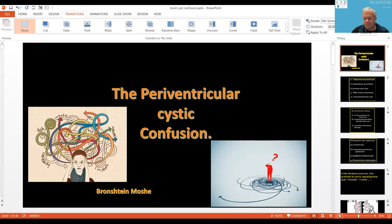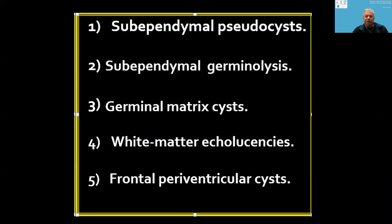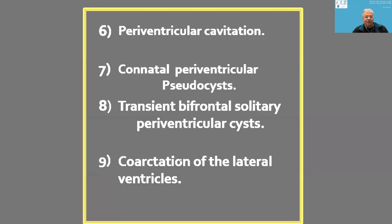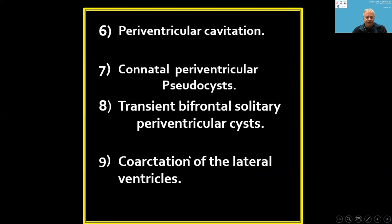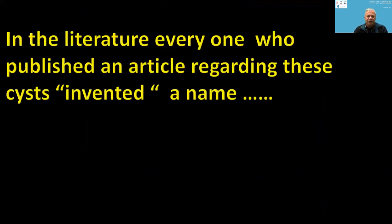I want to give a small lecture about periventricular cystic lesions. There are many names for these periventricular cysts — sub-ependymal pseudocysts, periventricular cavitation, and at least another four names in the literature. Everyone who published an article regarding these cysts invented a new name.